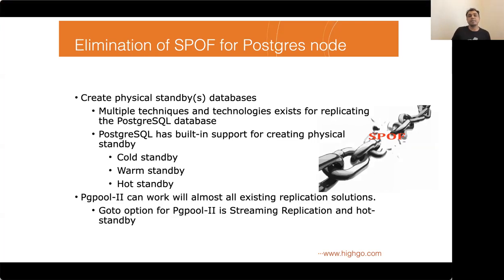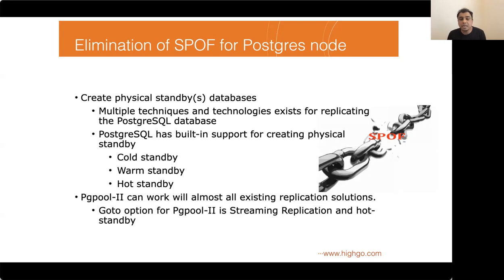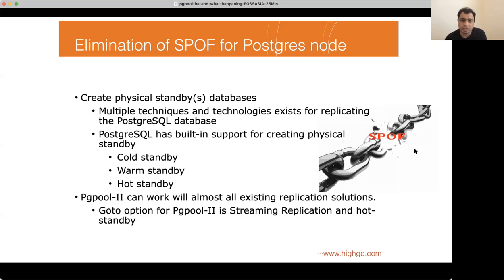Let's discuss how to implement each part of the strategy to build a highly available PostgreSQL cluster. The first thing we need to do is eliminate the single point of failure for our main resource — the PostgreSQL server — by installing multiple replicated database servers. There are lots of third-party tools that can do online database replication, and pgpool2 also has a built-in replication mechanism. We can create cold standbys, warm standbys, and hot standbys using built-in streaming replication provided by PostgreSQL. The go-to choice with pgpool2 is almost always built-in streaming replication and hot standby.